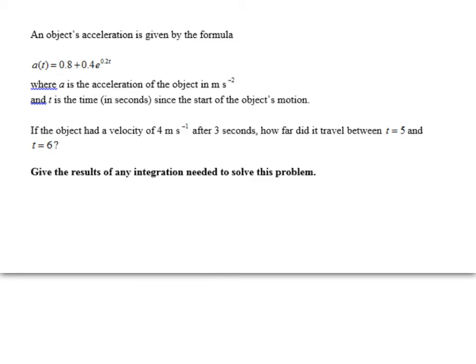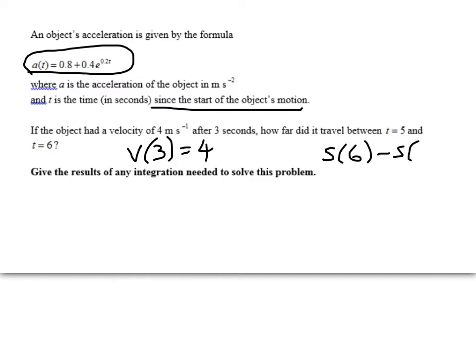On to part b. So a kinematics question. An object's acceleration is given by this formula here. a is the acceleration, and t is the time in seconds since the start of the object's motion. If the object had a velocity of 4 after 3 seconds, so v of 3 is equal to 4, how far did it travel between t equals 5 and t equals 6? So what we're looking at here is figuring out s of 6 minus s of 5. That's the way I'm going to do it here.